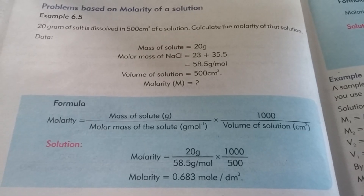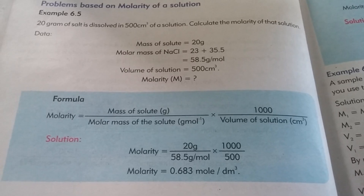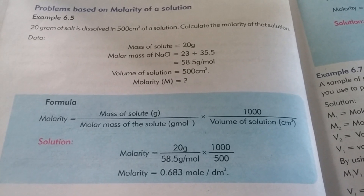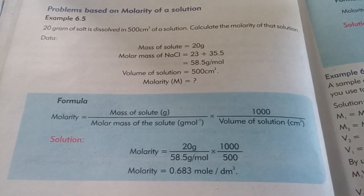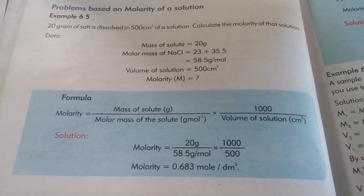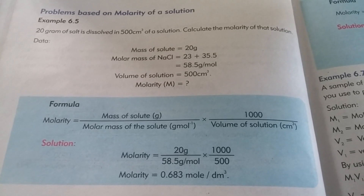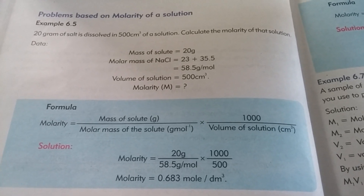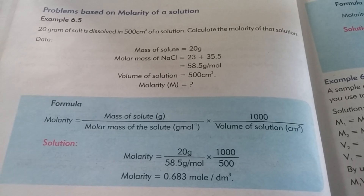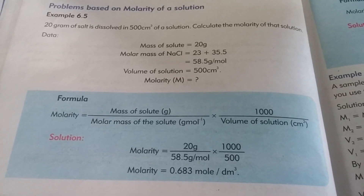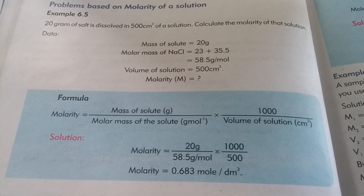Now look at the formula. All the values are mentioned in the given data. The mass of solute present in data is 20 grams, so we put 20 grams in the formula. This is divided by the molar mass of solute. From the data, the molar mass of sodium chloride is 58.5, so we put 58.5.